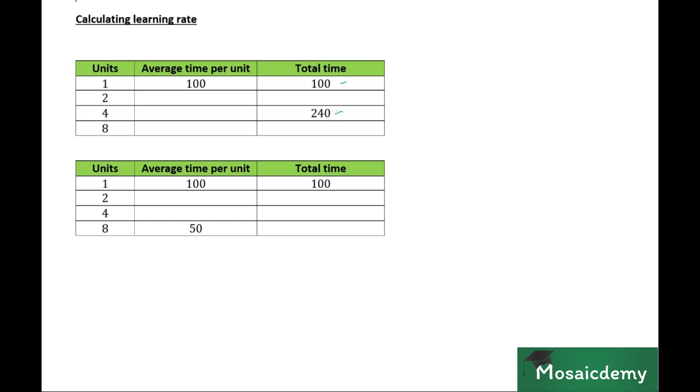How? Recall the base table that we covered. We had the table where we said units will always follow the pattern one, two, four, eight. And we said that if we have columns for average and total time, they will follow certain patterns as well.